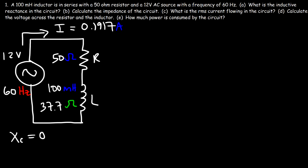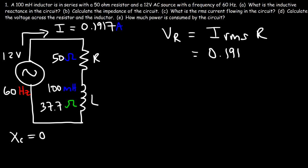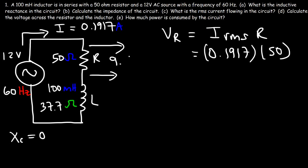Now let's calculate the voltage across the resistor and the inductor. The voltage across the resistor is simply the RMS current times the resistance — V equals IR according to Ohm's law. The current is 0.1917 amps and the resistance is 50 ohms, so the voltage across the resistor is 9.585 volts.